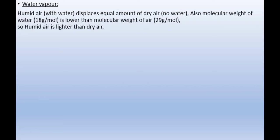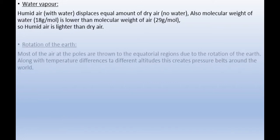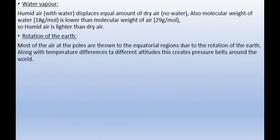The fourth factor is the rotation of the earth. Earth's rotation causes air at the poles to be pushed towards the equator. There is high pressure at the poles because of low temperature. Due to rotation, air coming down from poles occupies more space as it expands and its pressure falls. These low pressure belts are along parallels of 60 degrees north and 60 degrees south.